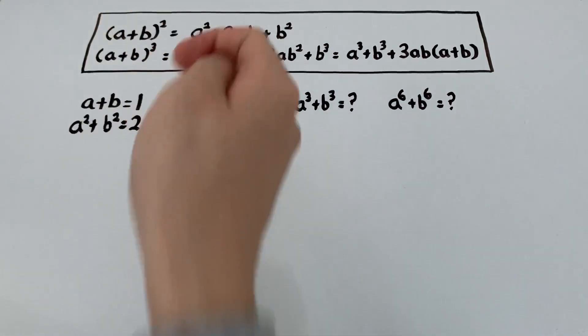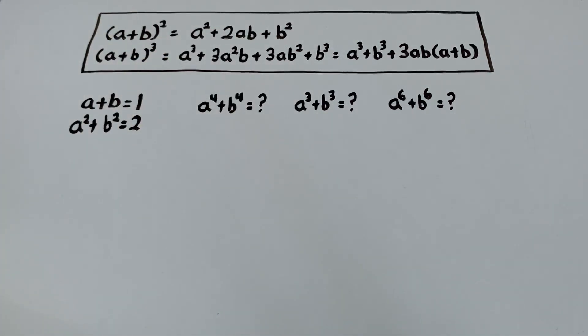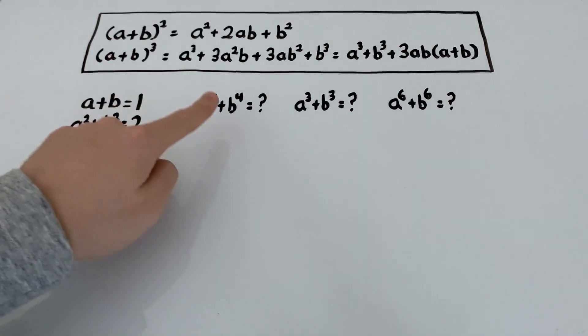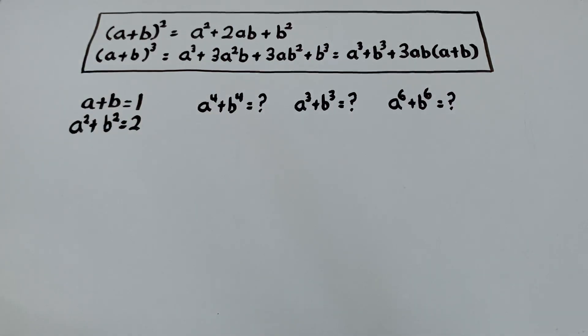And all of this can be verified if you just expand. I'm not going to go over that in this video, but maybe in another one. So now let's get into the problem. If a plus b equals 1, a squared plus b squared equals 2, let's find a to the 4th plus b to the 4th.